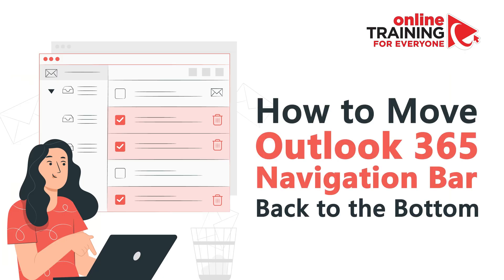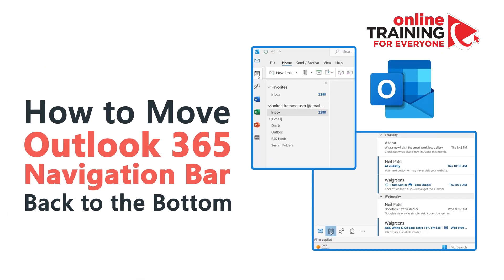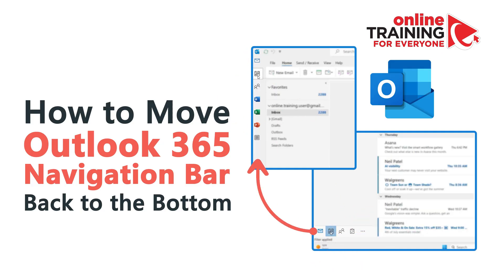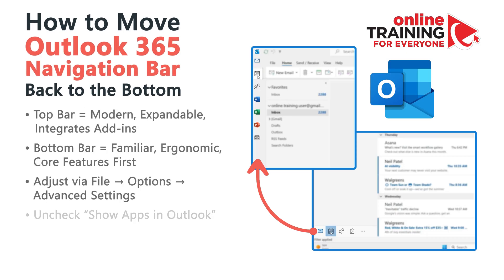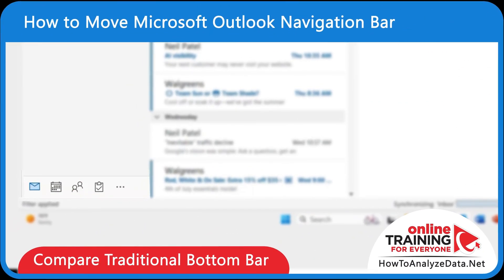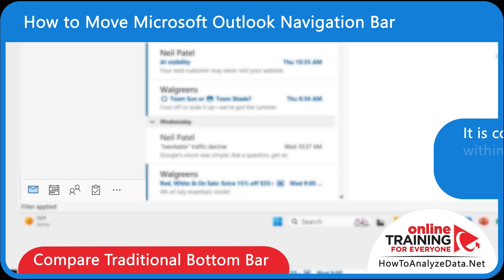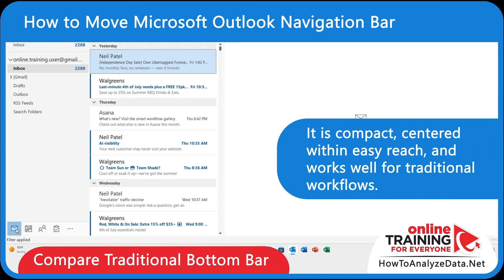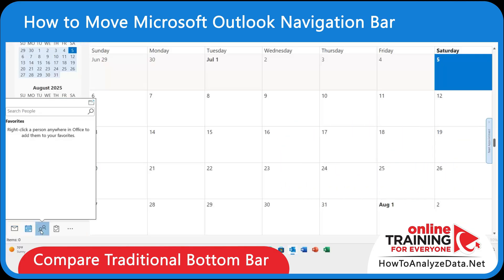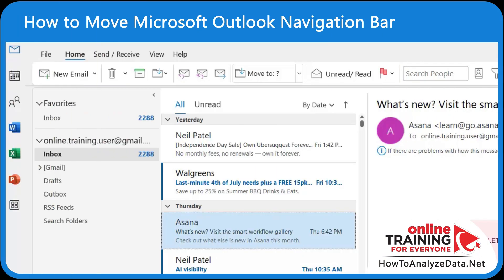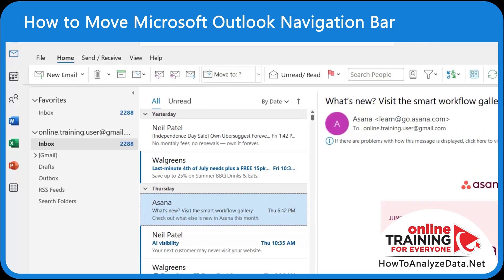Very often, you'll find yourself needing to navigate quickly between mail, calendar, contacts, and tasks in Outlook. In recent updates, Microsoft moved the navigation bar from its traditional bottom position to the top left corner. This change was meant to create a consistent experience across all Microsoft 365 apps, but not everyone finds it helpful. The bottom left position is compact, centered with easy reach, and works well for traditional workflows. If the bottom bar fits your workflow better, here's how to restore it.